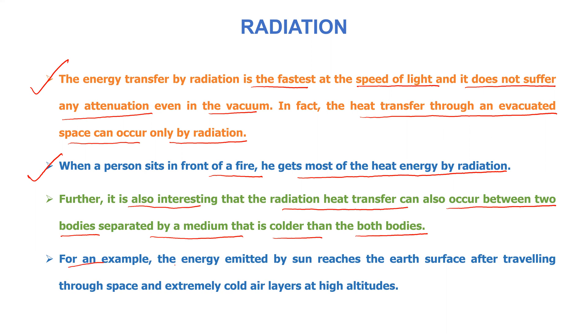For example, the energy emitted by sun reaches the earth's surface after travelling through space and extremely cold air layers at high altitude. Even then, we are able to get the energy from the sun even though the temperature of in-between layers is very, very low.